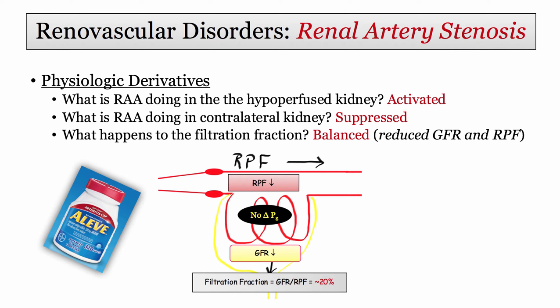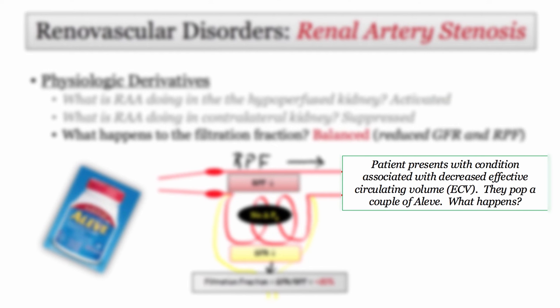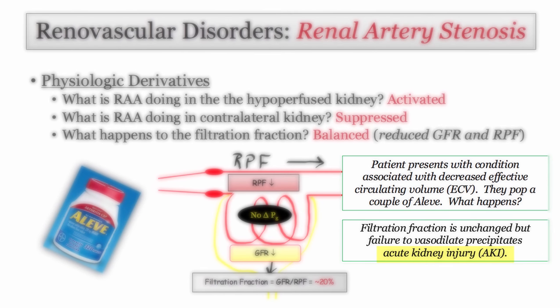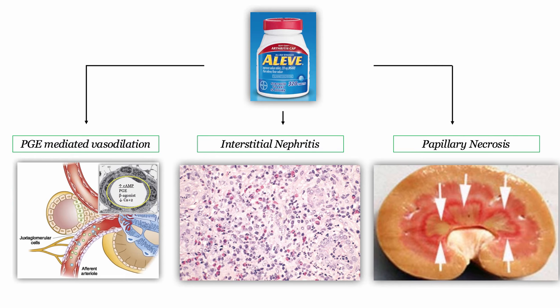A classic vignette: a patient presents with a condition associated with decreased effective circulating volume and takes a couple of NSAIDs. What happens? Based on the pre-glomerular location of the afferent arteriole, the filtration fraction will remain unchanged. But prostaglandins play a major role in the regulation of renal blood flow, so using that non-steroidal agent just interfered with prostaglandin-mediated vasodilation, precipitating acute kidney injury. Make sure you're familiar with the three renal topics involving NSAIDs that will come up on the boards: interference with renal perfusion, interstitial nephritis, and papillary necrosis.